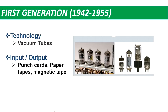1st generation computers span from 1942 to 1955. Vacuum tubes were used as major circuit elements, which worked like bulbs. They had heating elements and fuses that failed frequently, which is why their computer size was very large. They were non-portable, produced a lot of heat, and required air conditioning. They were very expensive.